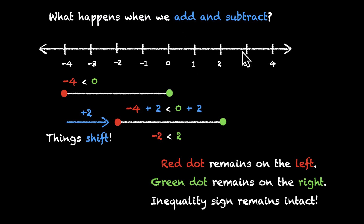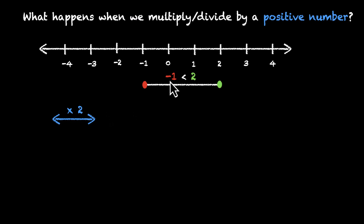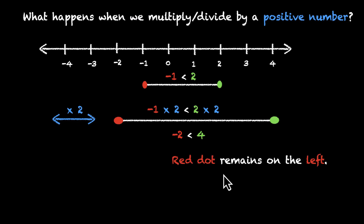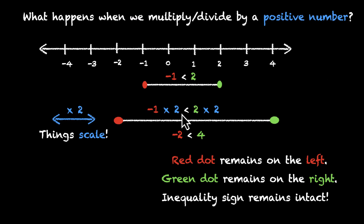What happens for multiplication and division? Let's look at positive numbers first. We have minus one and two — minus one is less than two. If we multiply by two, minus one becomes minus two and two becomes four. So minus one moves to minus two and two moves to four — this thing stretches, it scales. Visually, the inequality has not changed: what's less is still less, what's more is still more. The same applies to division — when we multiply we zoom in, when we divide we zoom out. But the red stays on the left and green stays on the right. When we multiply or divide by a positive number, the inequality sign does not change.